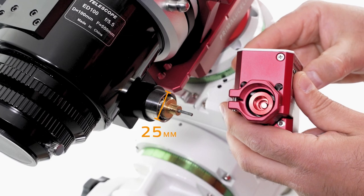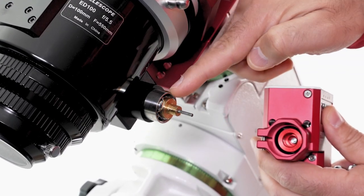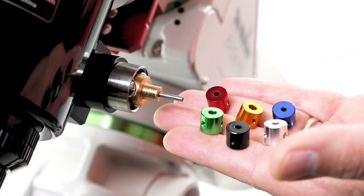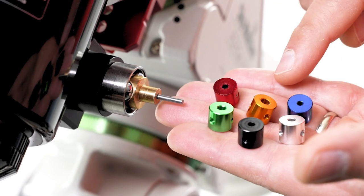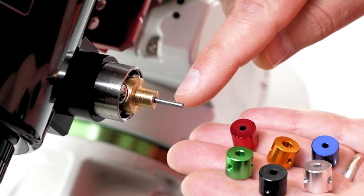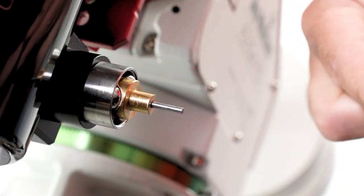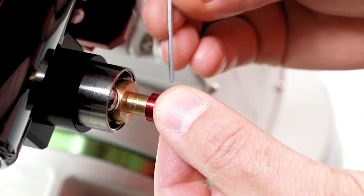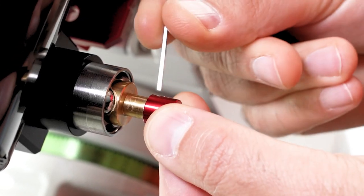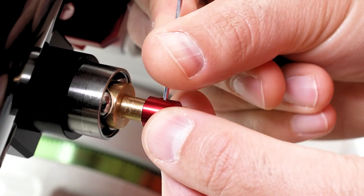In the Sesto Senso box you will find an assortment of different colored bushings that are designed to connect the motor shaft to the inner shaft of your focuser. You can simply choose the one that fits to your focuser's shaft, insert and fix with the provided allen screw.